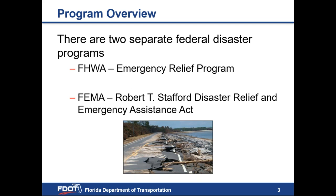FEMA's program, the Robert T. Stafford Disaster Relief and Emergency Assistance Act, activates upon a Presidential Declaration. The FHWA ER program provides disaster assistance for Federal-aid highways, while FEMA's program provides disaster assistance for non-Federal-aid highways. Additionally, upon activation, FEMA becomes the primary source of reimbursement for debris removal activities. FDOT is the pass-through agency for the FHWA ER program, so the ER program will be our focus for the remainder of this presentation.